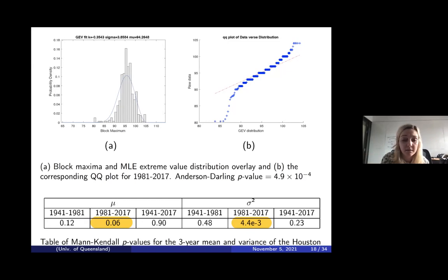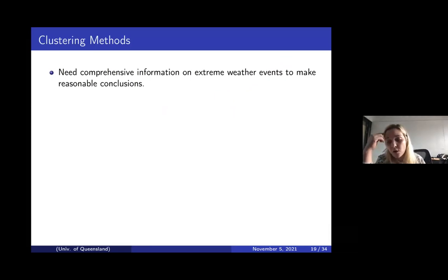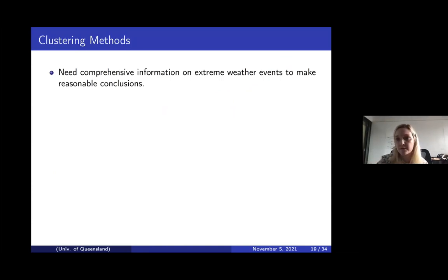But when we look at the data from 1981 to 2017, we find that poor fit again, especially in the tails. We did some change point analysis and found a change in the location and scale parameters. The Mann-Kendall test, a non-parametric test for trend, shows that over the period 1981 to 2017 there is something like a trend in both parameters, especially in the scale. This tells us something about what's happening in Houston, but not on the regional or state scale, so we can't make good decisions about whether something is actually happening or whether it's just an anomaly in one station.